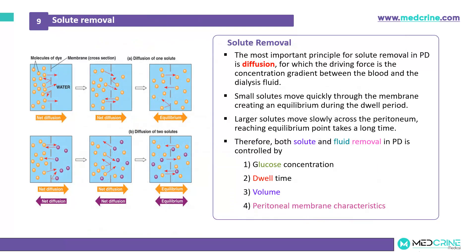The next thing we need to look at, besides fluid removal, is solute removal. The most important principle for solute removal in peritoneal dialysis is diffusion, for which the driving force is the concentration gradient between the blood and the dialysis fluid. Small solutes move quickly through the membrane, creating an equilibrium during the dwell period, while larger solutes move slowly across the peritoneum, taking longer to reach equilibrium. Therefore, both solute and fluid removal in peritoneal dialysis are controlled by four factors: glucose concentration, dwell time, volume, and characteristics of the peritoneal membrane.